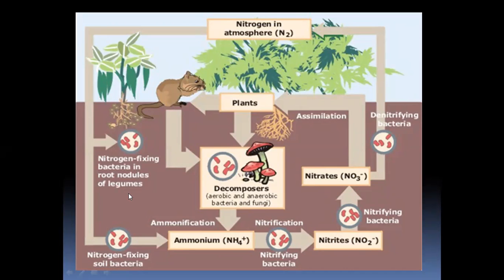These free-living bacteria are able to reduce nitrogen gas to ammonia using high energy, converting nitrogen gas into ammonium. Atmospheric fixation takes place by thunderstorms — at temperatures up to 2000 degrees centigrade — in which nitrogen and oxygen react to produce NO or NO₂.